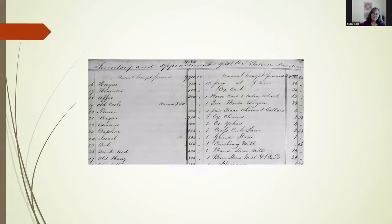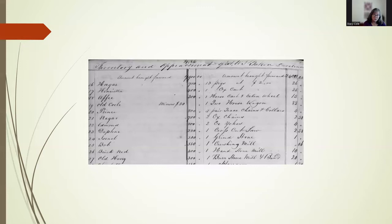Inventories that include enslaved people are hugely important for their descendants. Sometimes this is the only time you will see an ancestor's name in a document if they weren't mentioned in a will or deed record. The term 'old' before someone's name does normally refer to age, but there can be a wide difference. Old Seely was listed at a value of minus fifty dollars — meaning she was in such poor health and probably so aged that the other heirs would essentially be paying the person who took her. But old Harry, number 27, was valued at three hundred dollars, so he was younger and in better shape.